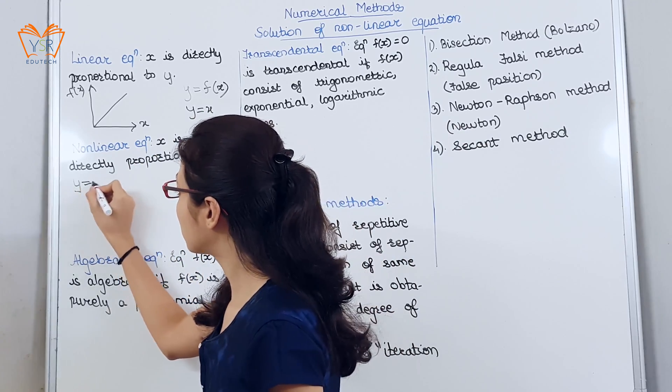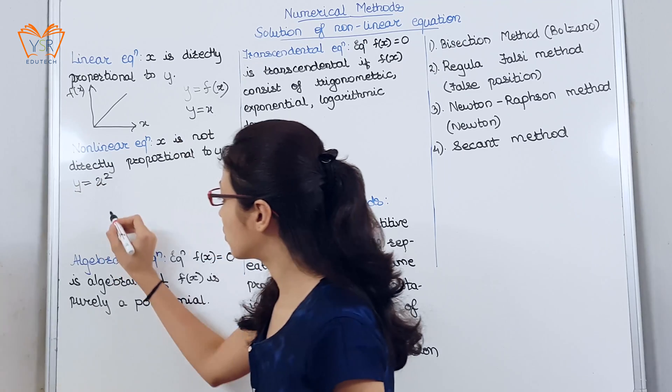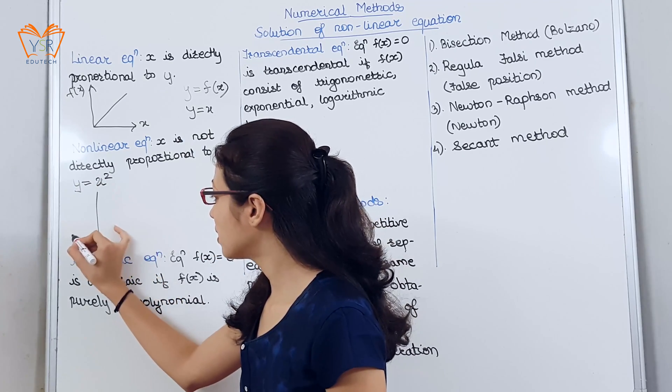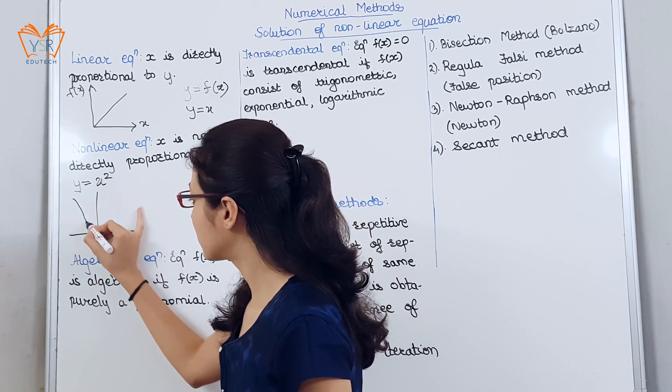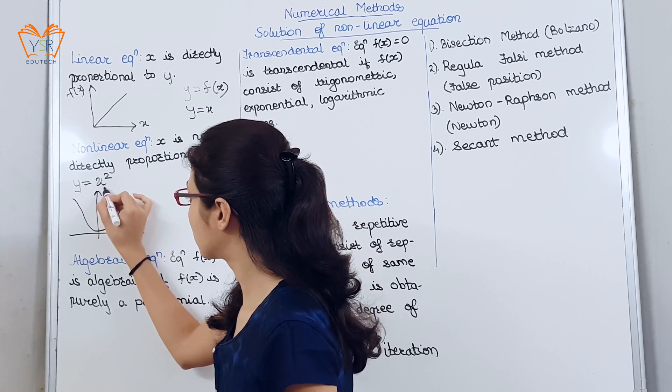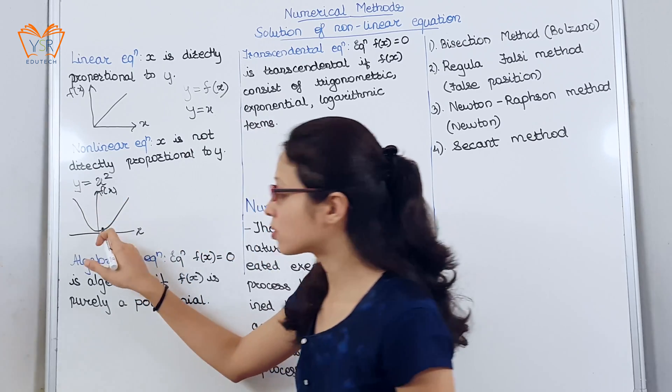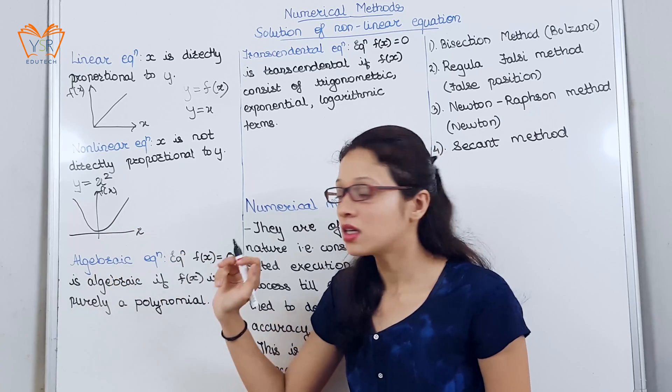So, let us consider one example: y equals x square. Graphically, it will be represented as not a straight line, but slightly a curved one.